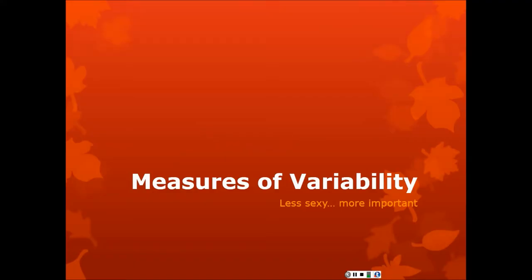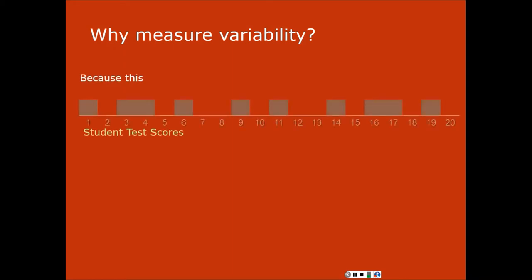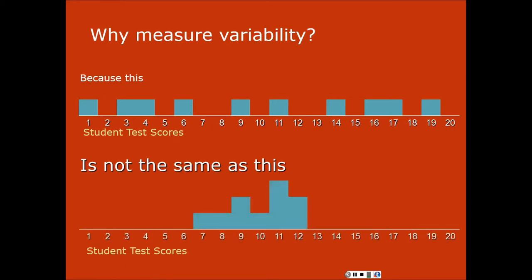Let's talk about measures of variability. Once we've talked about central tendency, this is the natural place to go. So why do we measure variability? An easy graphic way to look at it is because one distribution is not the same as another distribution. However, they both have the same mean. So the mean only tells you part of what you need to know about a distribution of scores. Any index measure where you're taking one number to represent a bunch of numbers is not going to tell you everything you need to know about those numbers.